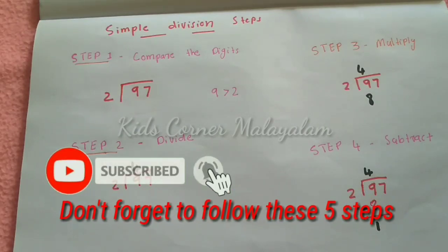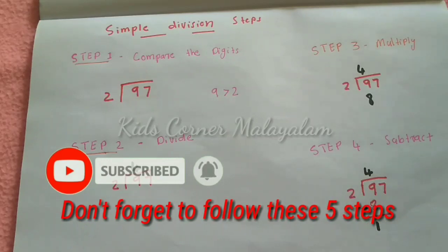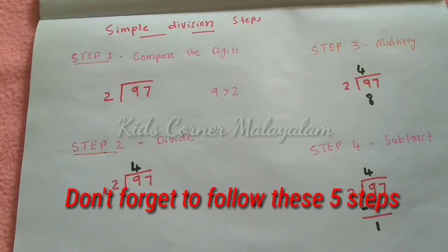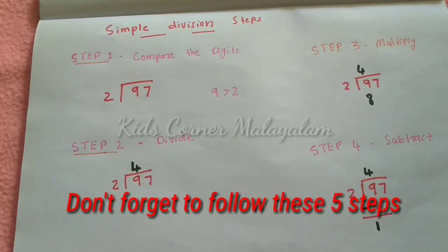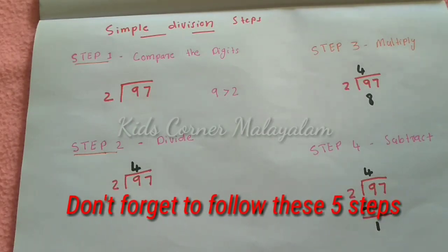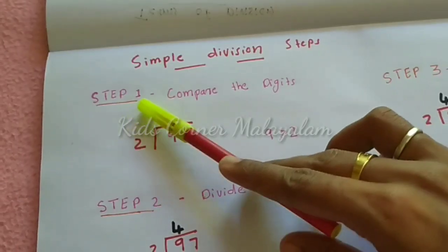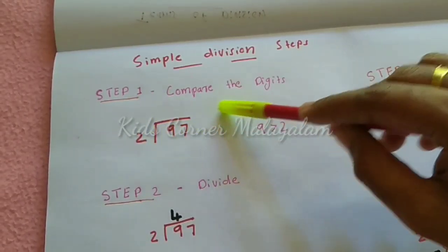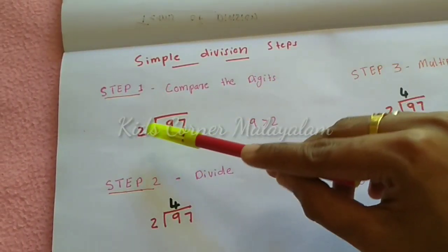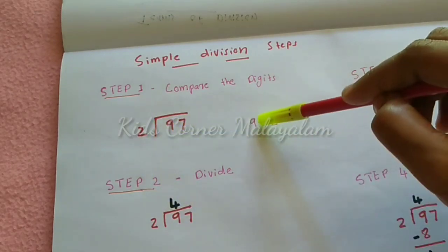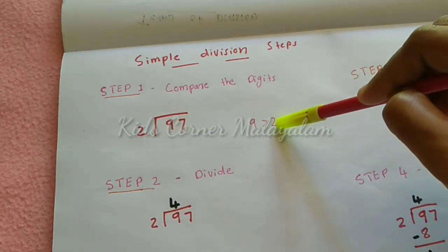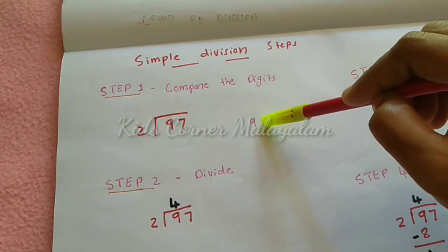We will go to the division. Step 1: Compare the digits. We will look at the first digit. 9 is greater than 2 — that is correct.